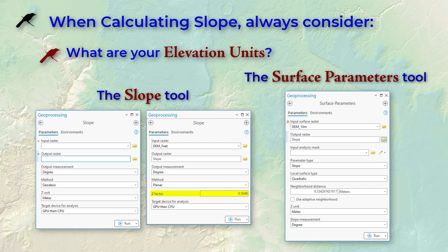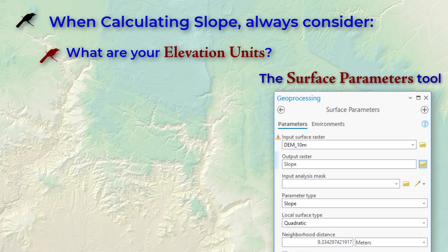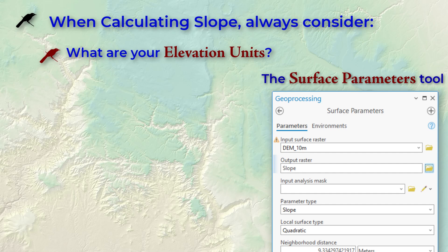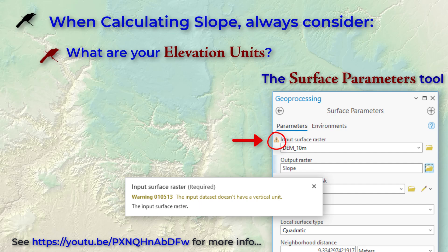Speaking of elevation units, both of these tools check to see if your DEM has elevation units specified in the coordinate system, and they warn you if it doesn't. It gives you a little message about vertical elevation units. I have a discussion of this issue in a separate video if you want to know more about it.